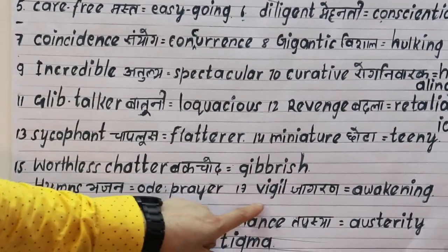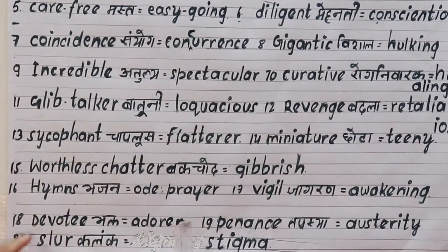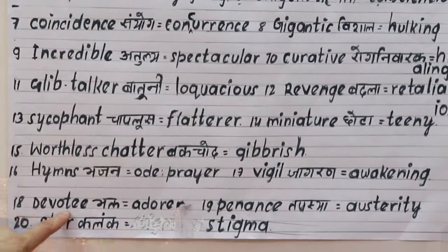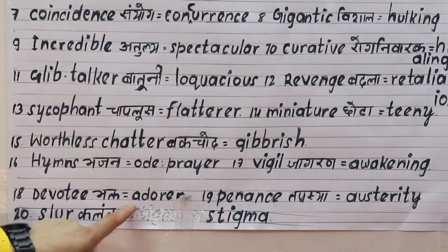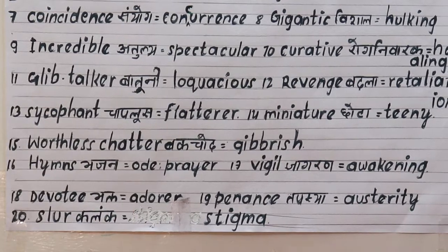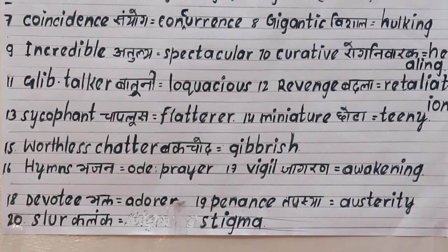Seventeenth is 'devotee', meaning a devoted follower or worshipper. The synonym is 'adorer'. For example: I am a devotee of Lord Krishna.